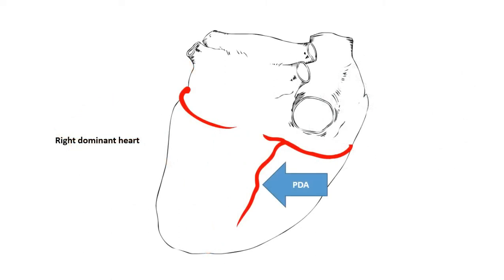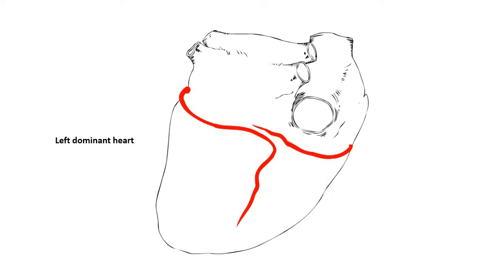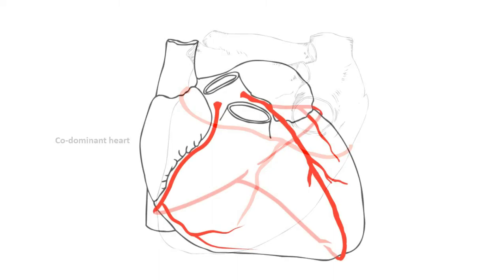There is another thing you need to know, which is called coronary dominance. Looking at the posterior inferior surface of the heart, coronary dominance depends upon the origin of the PDA or posterior descending artery. The PDA usually arises from the right coronary artery, but it can also arise from the left coronary artery. When the PDA arises from the right coronary artery, which happens in most cases, it is called a right dominant heart. If the PDA arises from the left coronary artery, it is called a left dominant heart. Sometimes the posterior descending artery can arise from both right and left coronary arteries — then we call it a co-dominant heart.